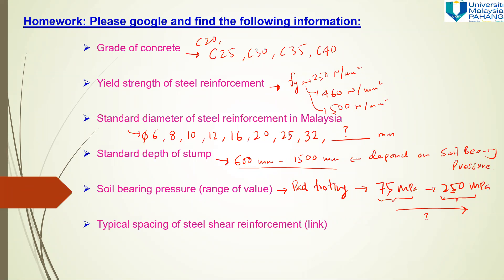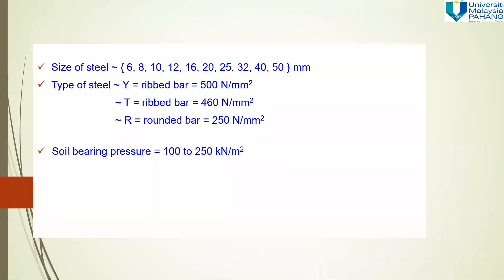The typical spacing of steel shear reinforcement, which is the link, may be set from 75 mm up to 300 mm, depending on the design code you refer to. If a bar is marked as Y, the strength is 500 N/mm². If marked as T, the strength is 460 N/mm². If marked as R, the strength is 250 N/mm².